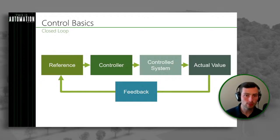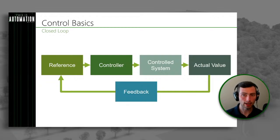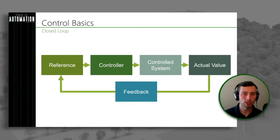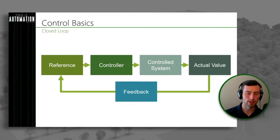If we move to closed loop, it's pretty similar, except we have feedback. We're actually taking that actual output value that we get and feeding it back so that we know how far off we are from our set point or our reference value.